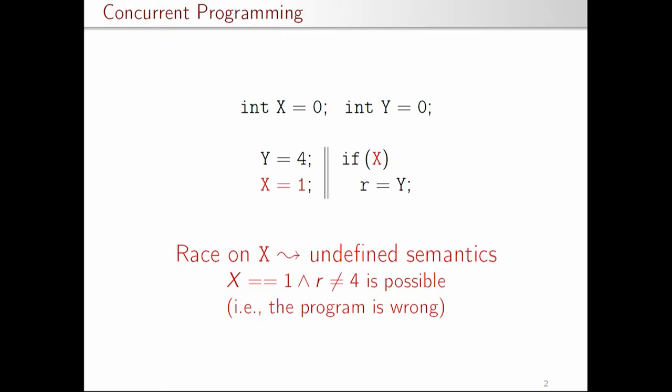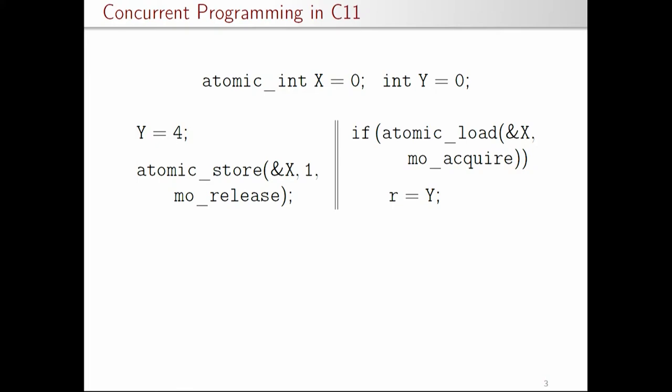To write such a program correctly and give it defined semantics, C/C++11 specification introduced atomic accesses. An integer is declared as atomic_integer and these locations are not accessed directly, but rather through specialized functions such as atomic_store or atomic_load. For example, in atomic_store, along with the memory location and value, it provides another parameter called memory order — in this case memory_order_release. On the load side, atomic_load gives the memory location and memory_order_acquire.